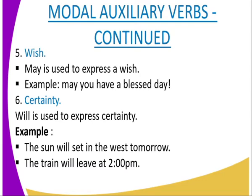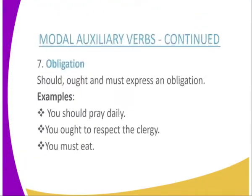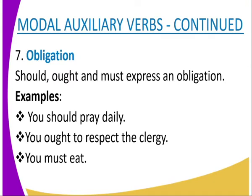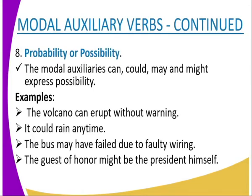'Will' is used to express certainty. For example: 'The sun will set in the west tomorrow' and 'The train will leave at 2 PM.' Modal auxiliaries expressing obligation include 'should,' 'ought,' and 'must.' For example: 'You should pray daily' — it's an obligation. 'You ought to respect the clergy.' 'You must eat' — it's an obligation, more of a command.